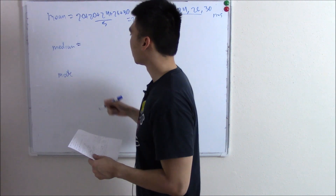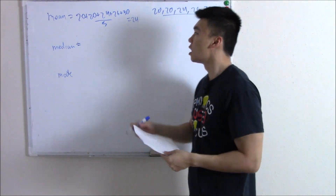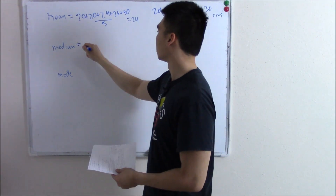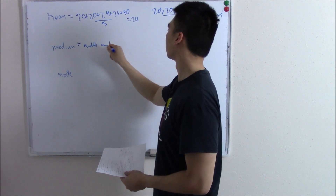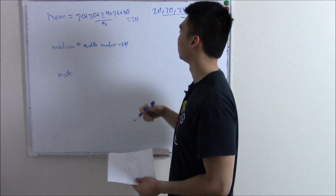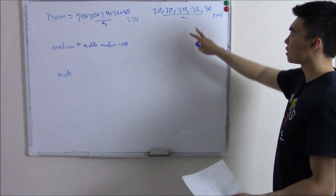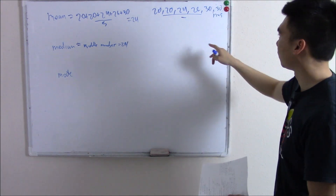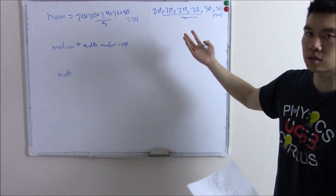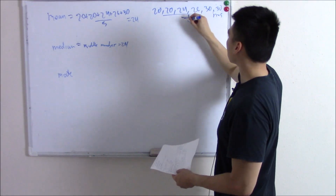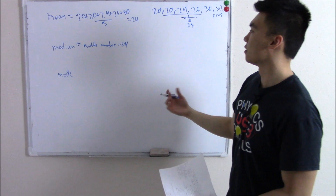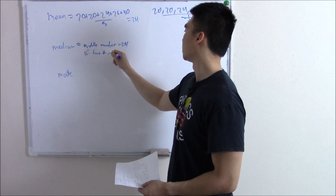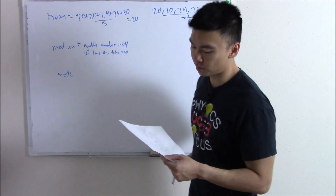Median — we call it median because it's just the middle number. We line everything up numerically, then we pick the middle number, which is 24. What if there's not just one single middle number? What if we add another person that's 30 years old? Now we have two middle numbers. If you have two middle numbers, just take the average. So the average of 24 and 26 would be 25. If you have two median numbers, take the average.